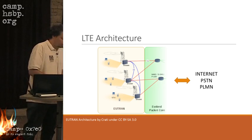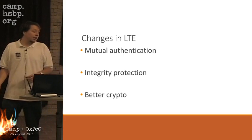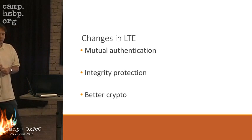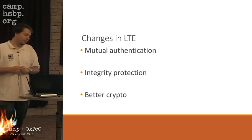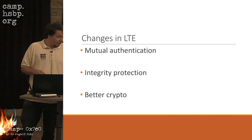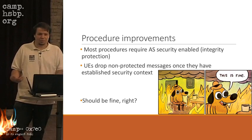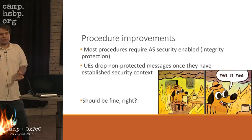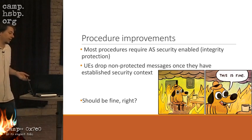What's changed in LTE? Mutual authentication was introduced in 3G and hardened in LTE. LTE uses integrity protection for all messages that can be protected — once the phone has a security context established, all messages should be integrity-protected and possibly encrypted. Many networks use only integrity protection without encryption, which the standard allows. Most procedures require security to be enabled, and the UE should simply drop non-integrity-protected messages. So even if I have a fake base station, a UE with an established security context should disregard my messages. Sounds fine, right?